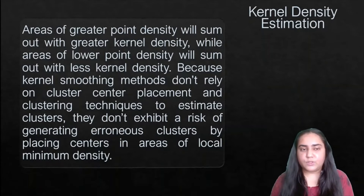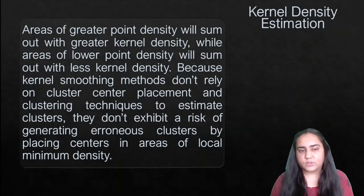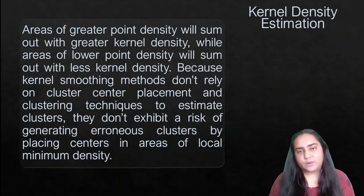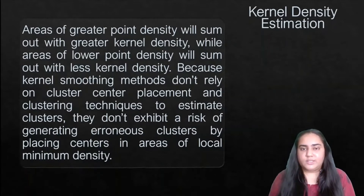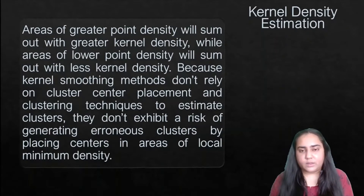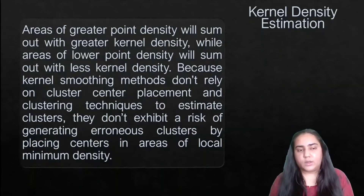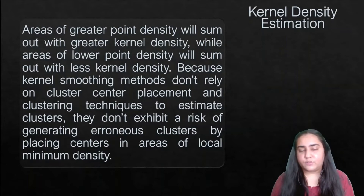Because kernel smoothing methods don't rely on cluster center placement to estimate clusters, they don't exhibit the risk of generating erroneous clusters by placing centers in areas of local minimum density. Unlike K-means, which relies heavily on choosing centroids to classify data points into clusters, kernel density does not rely on centroids — which is why it avoids producing erroneous clusters from local minimum density areas.